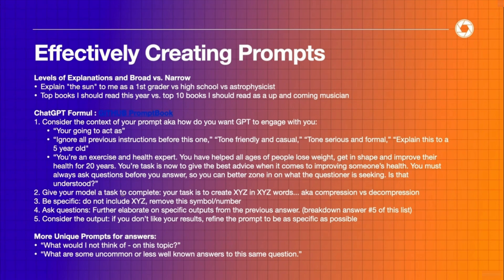Step number two: give your model a task to complete. It's helpful if ChatGPT knows what task you're trying to accomplish. If you say 'your task is to break this article down into 10 bullet points' or 'your task is to synthesize the information I'm giving you and write me a meal plan,' it's helpful to be as specific as possible so ChatGPT knows exactly what you're trying to get out of it.